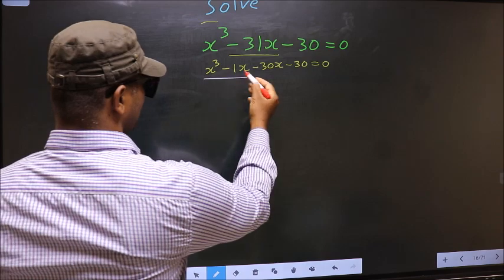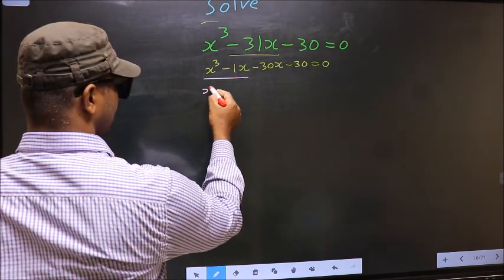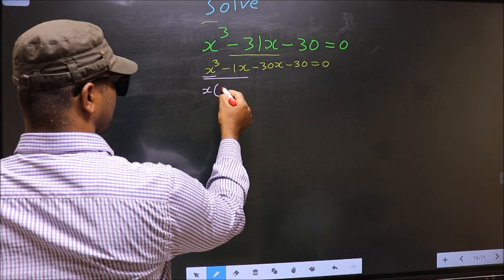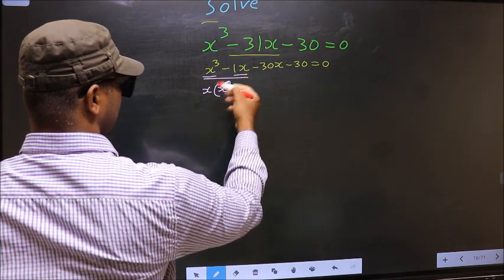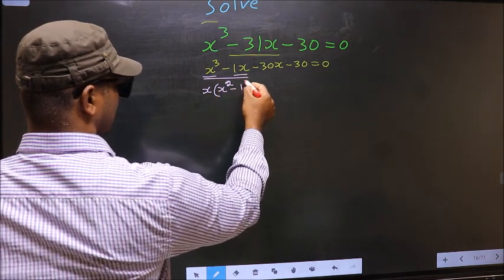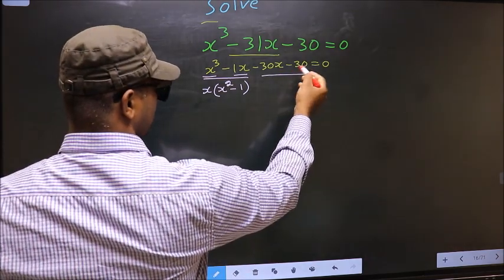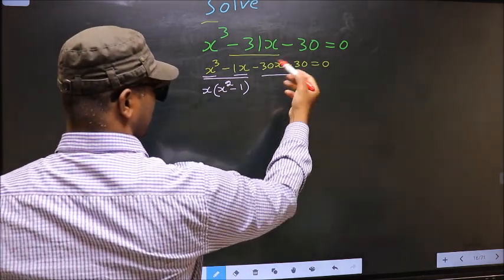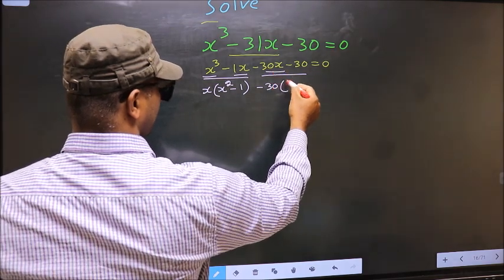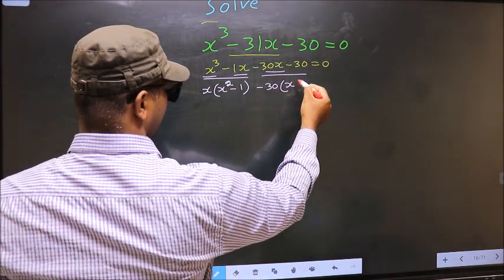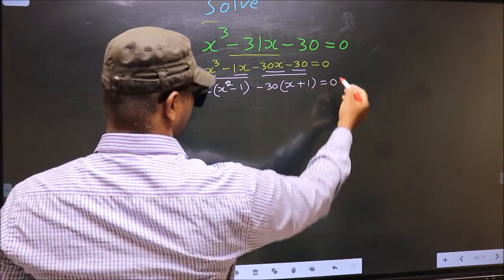Now from the first two terms, what can be taken out common is x. So here you get x squared minus 1. From the next two terms, what can be taken out common is minus 30. Here you get x plus 1, equal to 0.